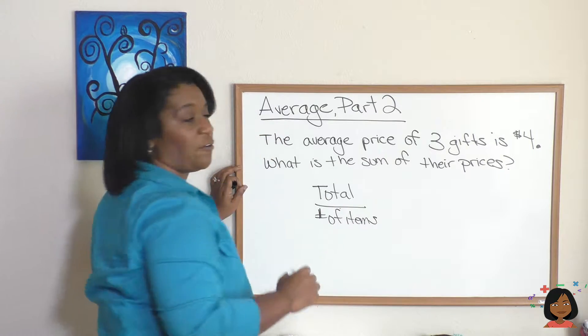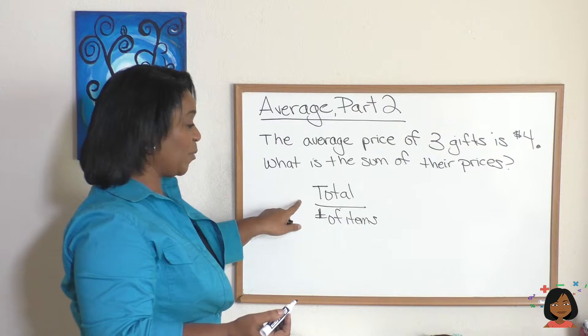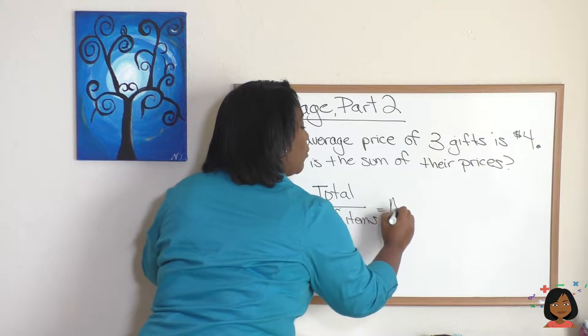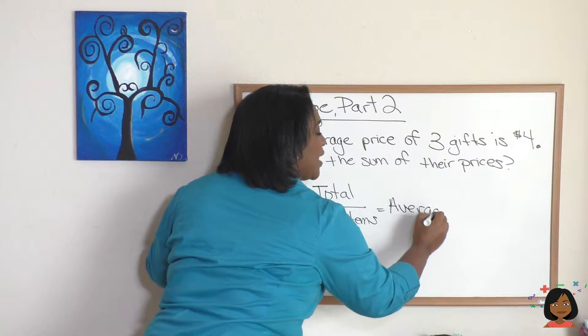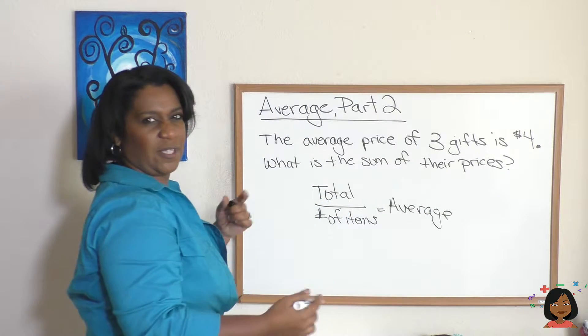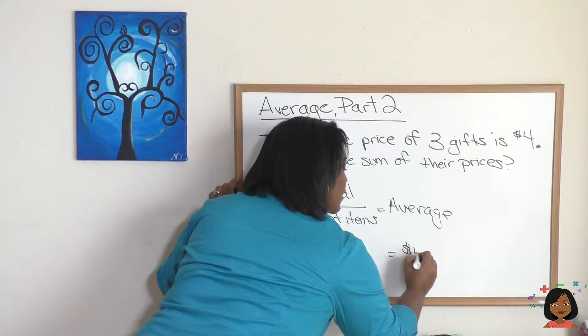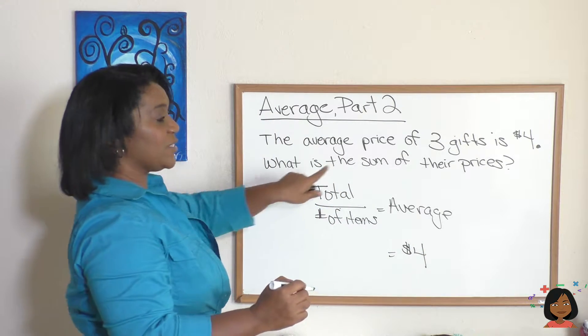If you had five tests, we would total up all our test scores and then we would divide it by five and that would be our average. But now we're going in reverse. They gave us the average, so let's fill it in. They gave us the average is four dollars.